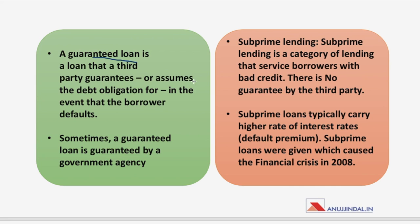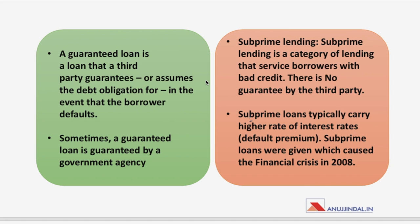The last term is subprime lending — a very important finance term with a significant mark in the history of crises. Subprime lending means lending to a person with a bad credit history with no third-party guarantee. To safeguard themselves, banks hike the interest rates with respect to the default premium. One of the reasons for the 2008 financial crisis in the US was the subprime loan.